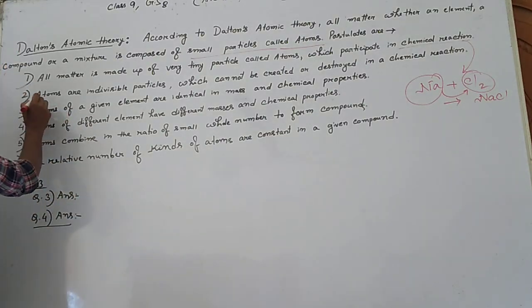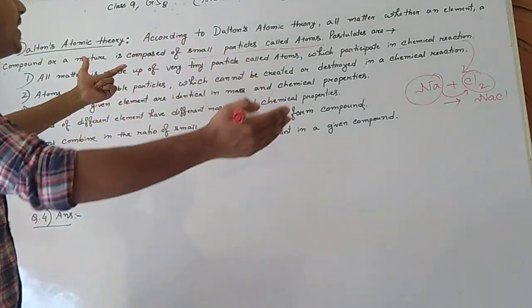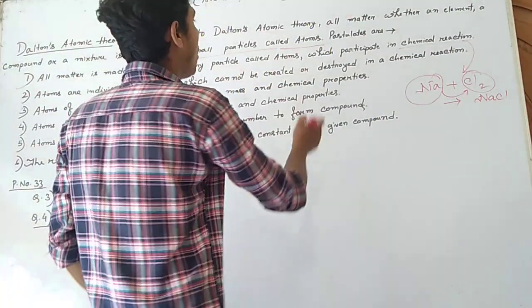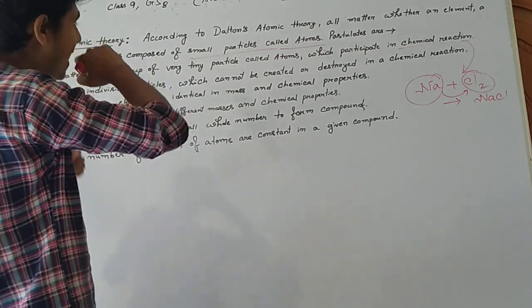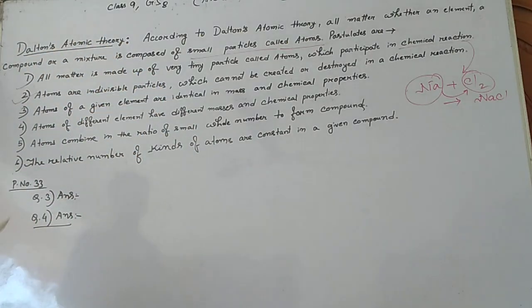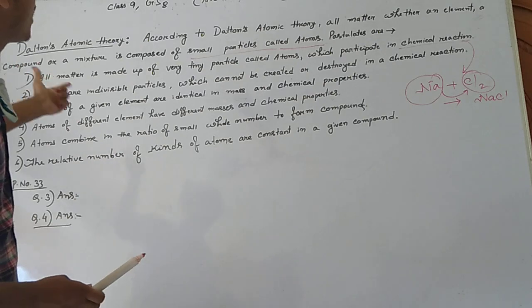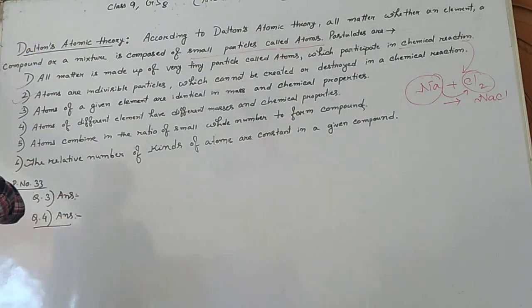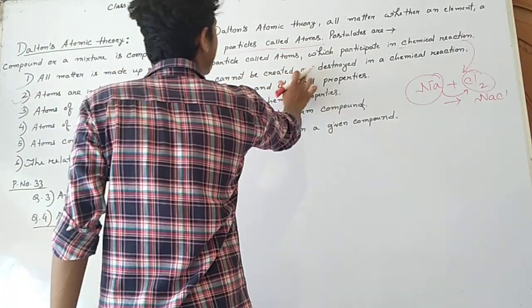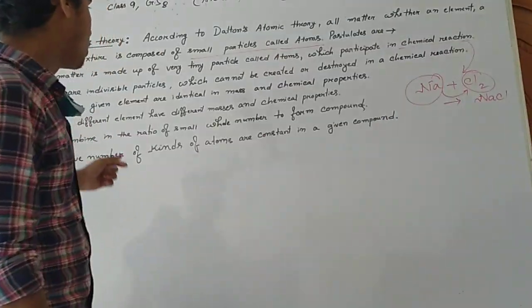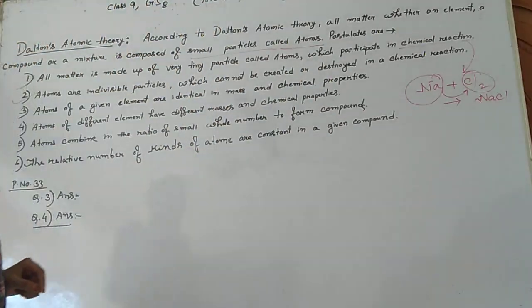The second postulate is: atoms are indivisible particles which cannot be created or destroyed in a chemical reaction. This is very similar — in fact, 100% similar — to the law of conservation of mass, which states that mass cannot be created or destroyed in a chemical reaction. So postulate number 2 supports the law of conservation of mass.